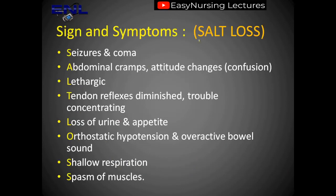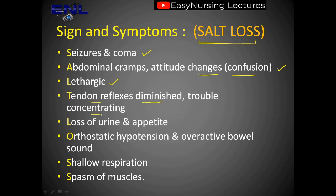Now let's talk about signs and symptoms. The mnemonic is 'SALT LOSS' because there is a salt loss in your body. From S, we have seizures and coma. From A, we have abdominal cramps and attitude changes — attitude changes in terms of mental ability, leading to confusion; the person will remain lethargic. Tendon reflexes are diminished, and there is trouble concentrating. From L, loss of urine and appetite — no hunger. Orthostatic hypotension means low blood pressure related to posture, whether sitting or standing.